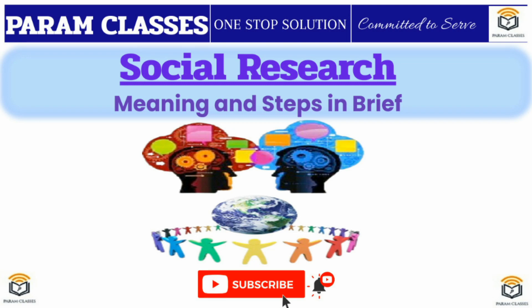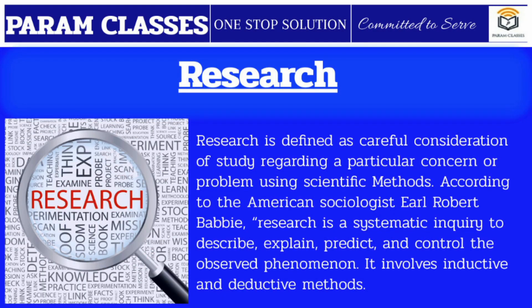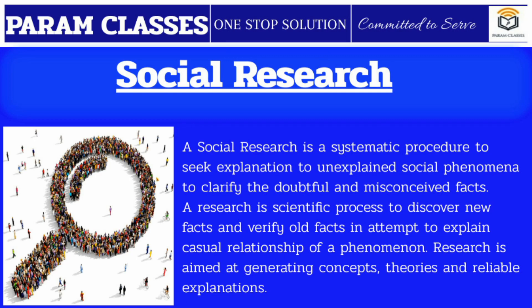We have discussed about the research paper writing process in our previous session. Today we will know about what is research and the steps in social research. Research is defined as a careful consideration of study regarding a particular concern or problem using scientific methods. Social research is a systematic procedure to seek explanation to unexplained social phenomena and to clarify doubtful and misconceived facts. Research is a scientific process to discover new facts and verify old facts in an attempt to explain casual relationships of a phenomenon.